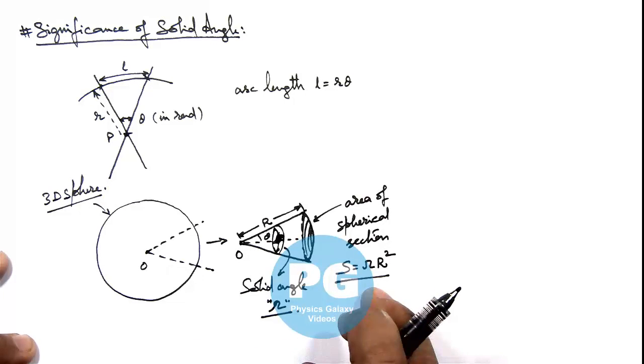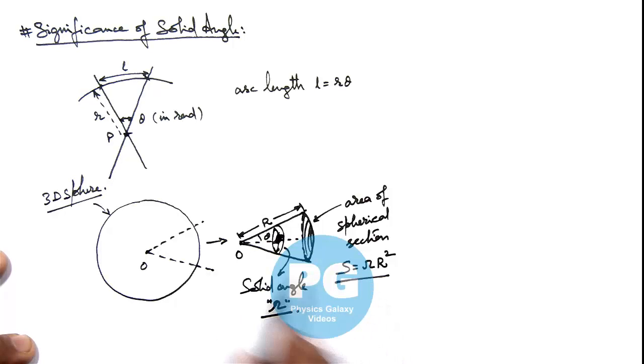Why I am writing this as omega r square? It will be clear to you when we relate omega with the half angle of cone. Here once again, this situation you can analyze over here.